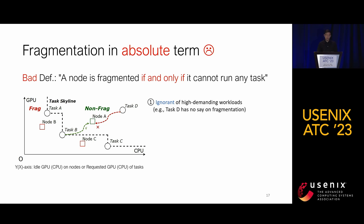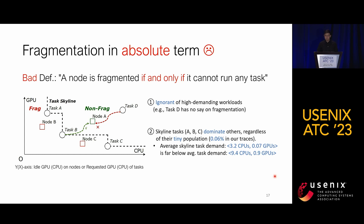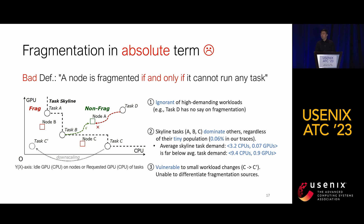Such a definition first ignores high-demanding workloads. As long as A can host task B, task D in the corner — which might be a multi-GPU training or serving workload — has no say in node A's fragmentation. In our traces, the skyline task occurs for only 0.06% and is far below the average task demand. Finally, such a definition is vulnerable to small changes: if task C reduces its CPU allocation to become C', the whole skyline dramatically changes, making all nodes appear non-fragmented. This is a bad definition. Also, from a scheduling perspective, simulating allocation of 8,000 tasks to 6,000 GPUs shows that fragmented GPUs in absolute terms stay below 5% throughout, making this definition overly restrictive and failing to provide useful early feedback on scheduling quality.